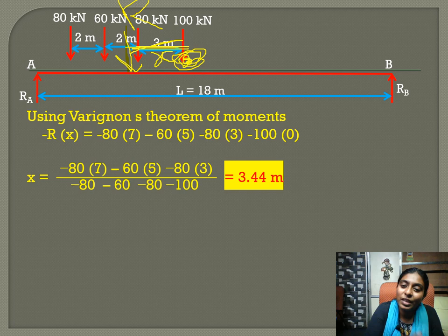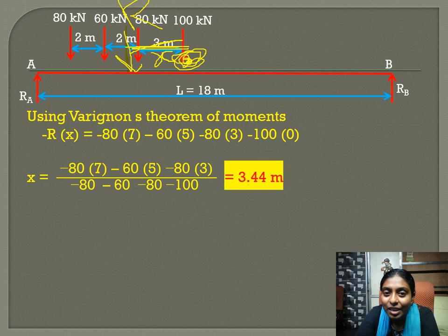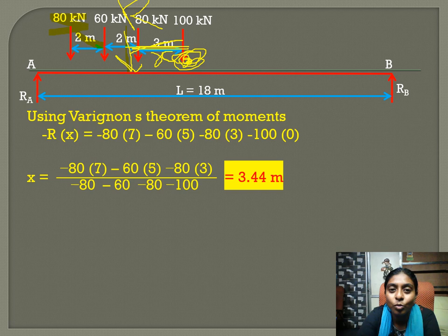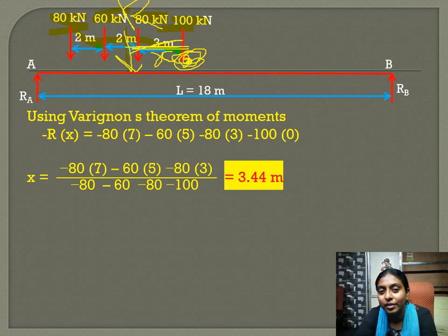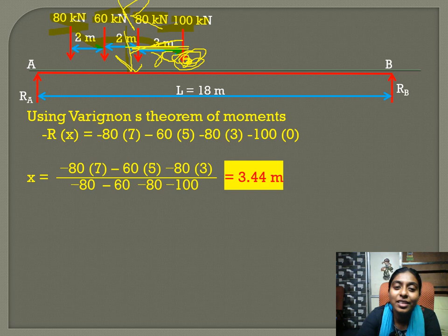The moment equation is: −R·x = (−80 × 7) + (−60 × 5) + (−80 × 3) + (−100 × 0). Solving, x = [−(80×7 + 60×5 + 80×3 + 100×0)] / (sum of all loads). This gives x = 3.44 meters — the distance between the resultant R and the 100 kN load.